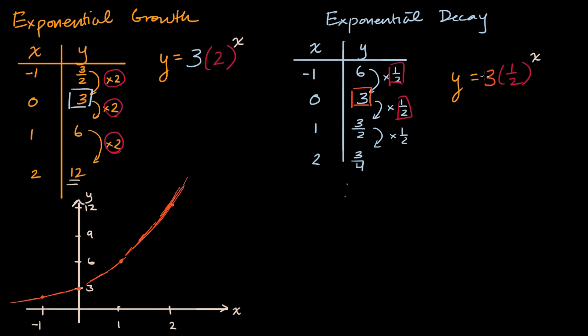And so notice, these are both exponentials. We have some y-intercept or initial value, and it's being multiplied by some common ratio to the power x. But notice, when you're growing, our common ratio, and it actually turns out to be a general idea, when you're growing, your common ratio, the absolute value of your common ratio, is going to be greater than one. So the absolute value of two in this case is greater than one, but when you're shrinking, the absolute value of it is less than one. And that makes sense, because if you have something where the absolute value is less than one, like one half or three fourths or zero point nine, every time you multiply it, you're going to get a lower and lower and lower value.